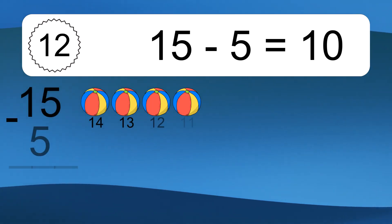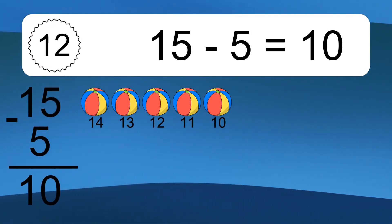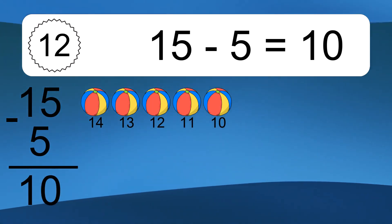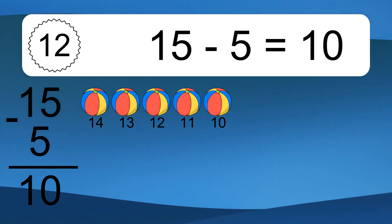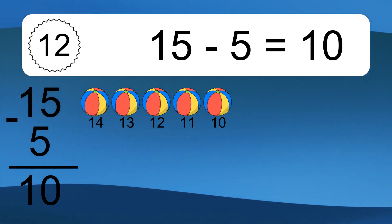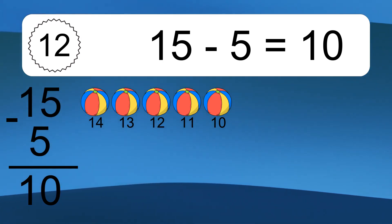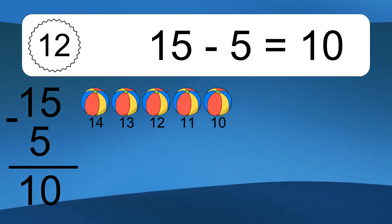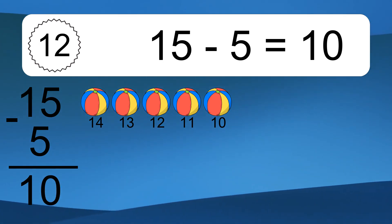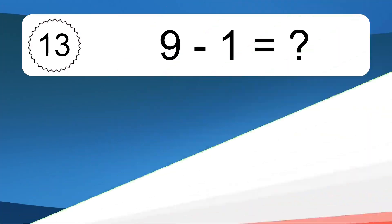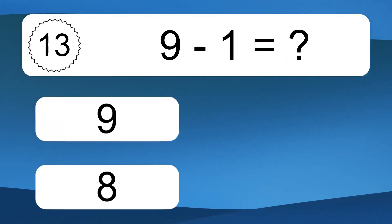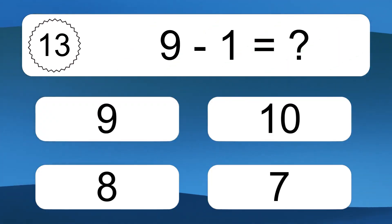15 minus 5 equals what? 15 minus 5 equals 10. Let's count it: 14, 13, 12, 11, 10.